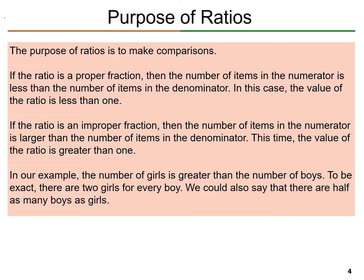What's the purpose of ratios? The purpose of ratios is to make comparisons. If the ratio is a proper fraction, then the number of items in the numerator is less than the number of items in the denominator. In this case, the value of the ratio is less than 1. A proper fraction is just a fraction where the numerator is less than the denominator. For example, 1/2 is a proper fraction because 1 in the numerator is less than 2 in the denominator.